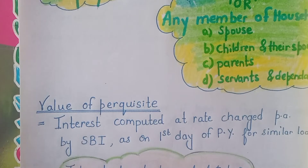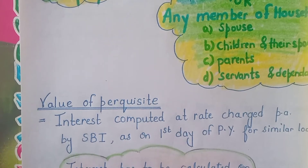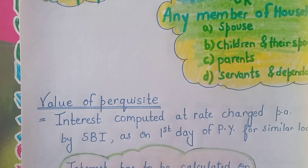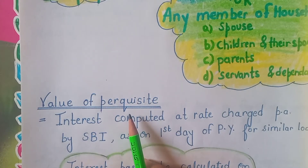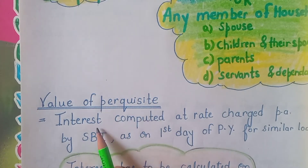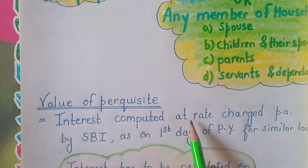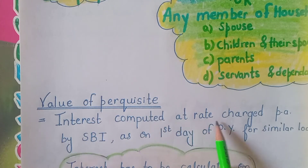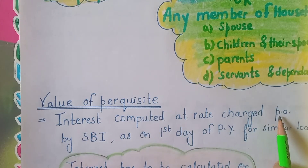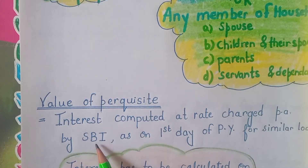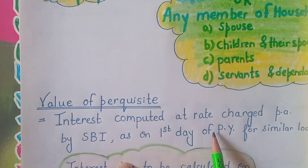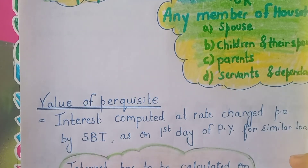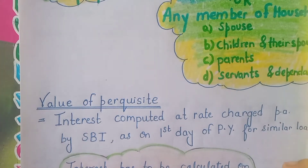What will be the value of the perquisite? Once you have identified that it is a perquisite, how will it be valued? Interest is computed at the rate charged per annum by the State Bank of India as on the first day of the previous year for similar loans.